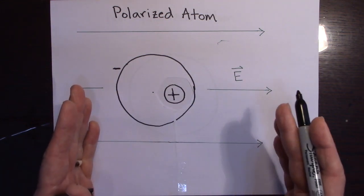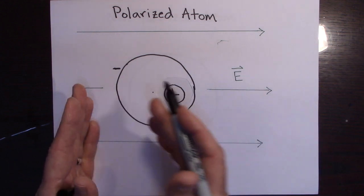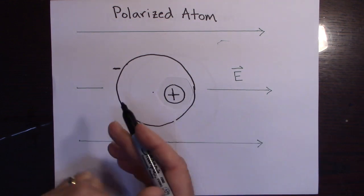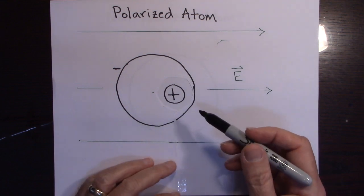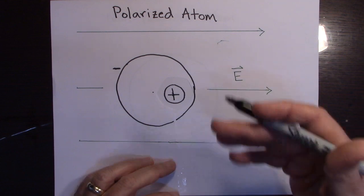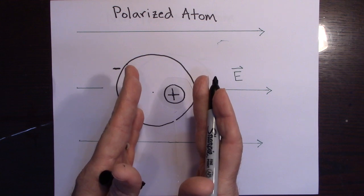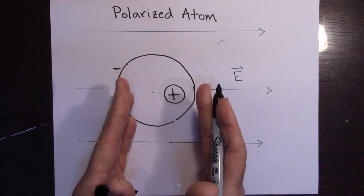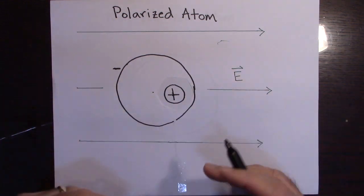there'll be a point where you build up so much potential that there'll be a spark that goes across. That's a spark. In fact, we take advantage of that with a spark plug. That's how we ignite the gas-fuel mixture is we get the potential to be so great between the two plates that there's a spark that goes across and it ignites the gasoline.